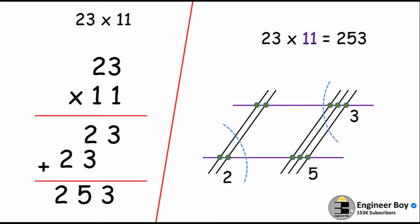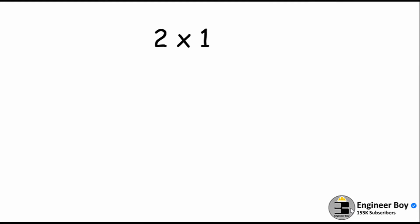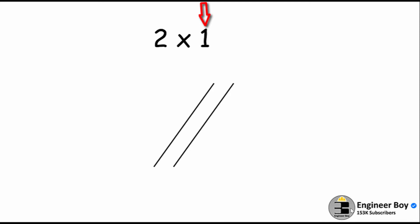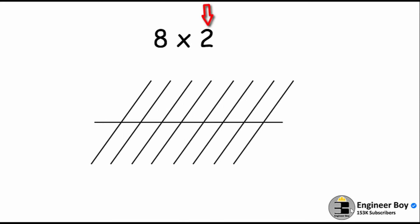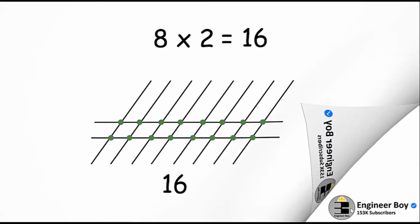Next I'll start from the basics so you and your kids can understand. Like 2 times 1 — I'll draw two lines in one direction, then draw another line in the other direction for the 1. We count intersections, which are two, so 2 times 1 equals 2. Another example: 8 times 2 — draw eight lines in one direction, two lines in the other, count the intersections which are 16, so 8 times 2 equals 16.